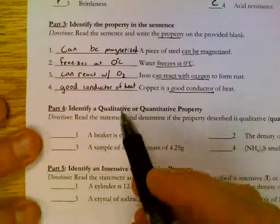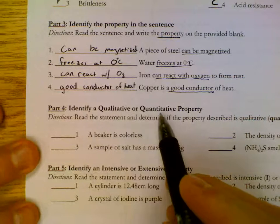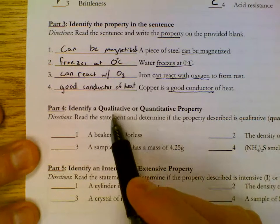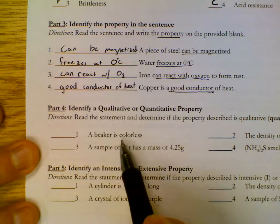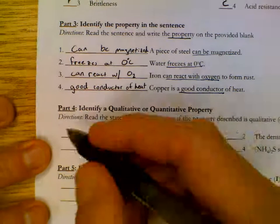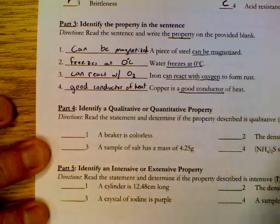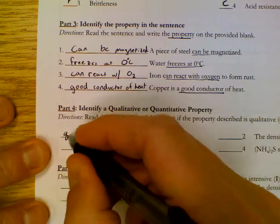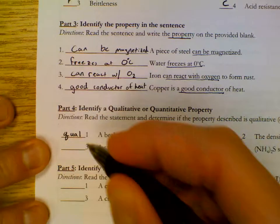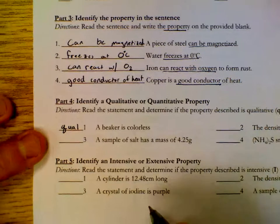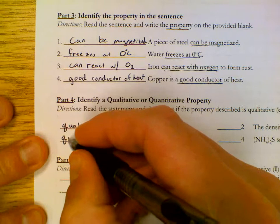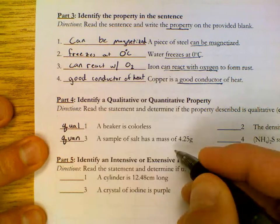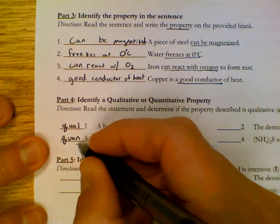Now we're differentiating between qualitative and quantitative properties. Qualitatives use words like adjectives. Quantitative use numbers. Beaker is colorless. So here's our property colorless. That's a word which makes this qualitative. Write down QUAL for qual. Sample has a mass of 4.25 grams. That's quantitative. That's a number.